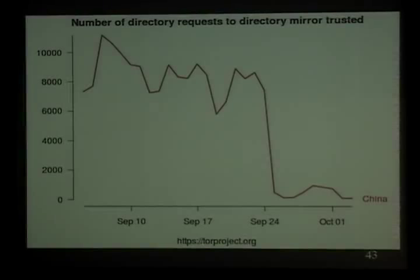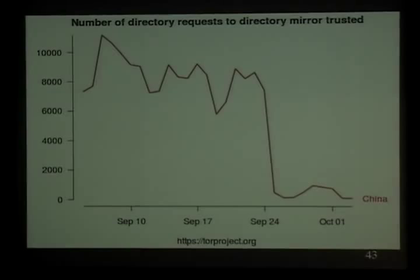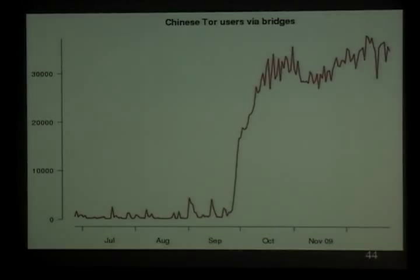Back to September 25th: they were actually blocking because October 1, 2009 was the 60th anniversary of the founding of the People's Republic of China. They really wanted to prepare by blocking circumvention tools. But we'd already prepared — we knew it was easy to block TOR, so we'd put out the bridge design, translated it into Chinese, and said 'when they block TOR, here's what you do: you need to get a bridge.' The result was, over the course of a week, 30,000 people switched from using TOR directly to using a bridge.